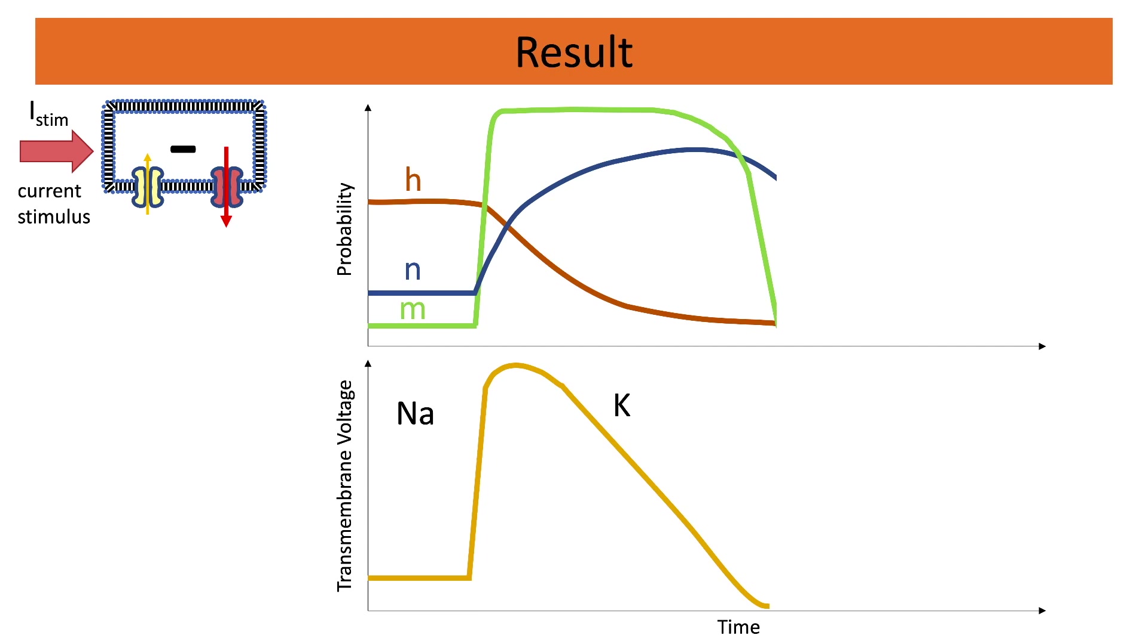So we arrive at a transmembrane voltage that is at a lower value here than the starting point. With the closing of the N gates, we slowly go back to the initial state of the system and the system is ready to receive a next stimulation.